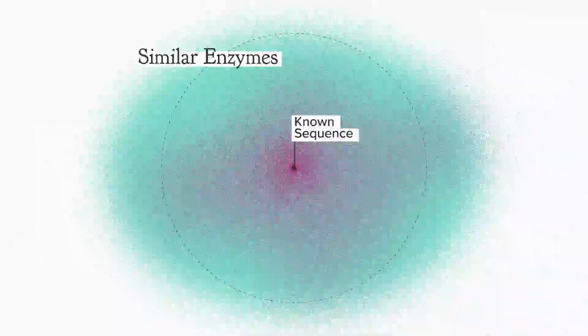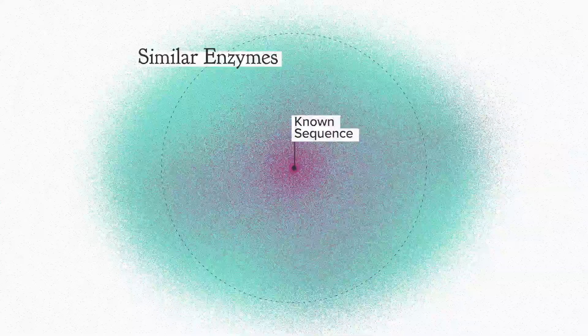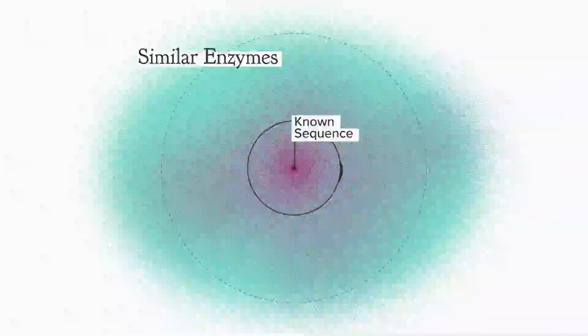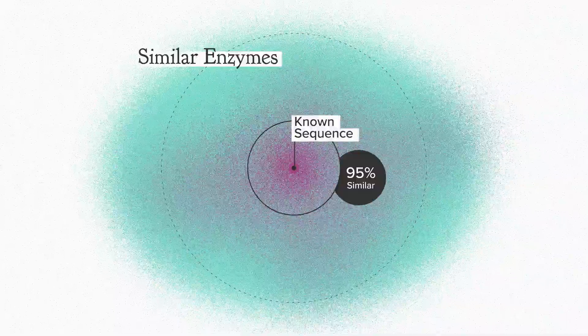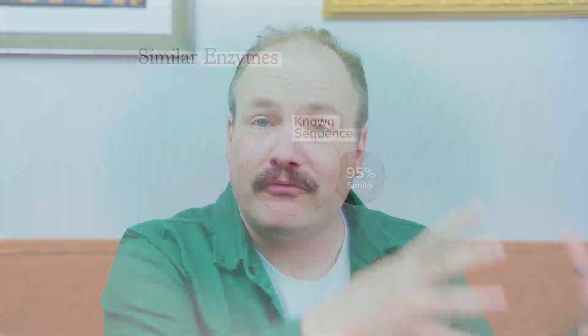You can see this mental model at work in the many biological patents that claim a single amino acid sequence and everything that is 95% similar or some other threshold. The assumption is that the function — the thing that matters — can be well approximated by the sequence, the thing that can be easily edited and searched.